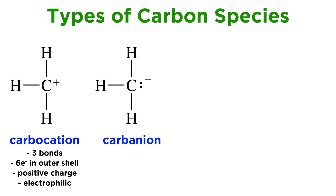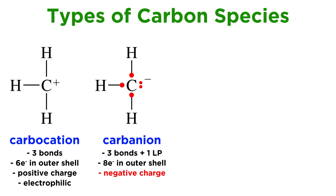Carbanions, on the other hand, have a full outermost shell of eight electrons, as they have four electron domains, but one of them is a lone pair. Contributing five electrons to the Lewis structure instead of four, the carbon must bear a formal negative charge. Carbanions are therefore nucleophilic, and will seek to coordinate to some electron deficiency so as to share the lone pair with some other atom and neutralize itself.